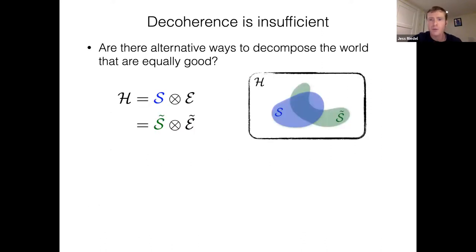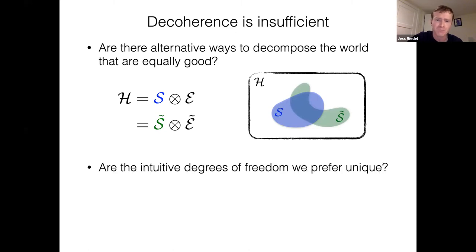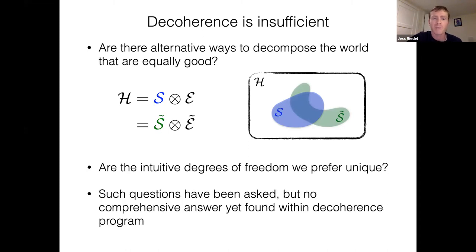One way to hammer down further on the problem is to ask: are there alternative ways to decompose the world that are equally good? How much of what we've seen depends on just what humans happen to be interested in? Or is there something special about these decompositions as far as the universe is concerned, from a non-anthropocentric point of view? Are these intuitive degrees of freedom unique, or is there some other way to break the world up — some alternative system S-tilde — that would be just as good? These questions have been asked, but there's really no comprehensive answer yet within the decoherence program.